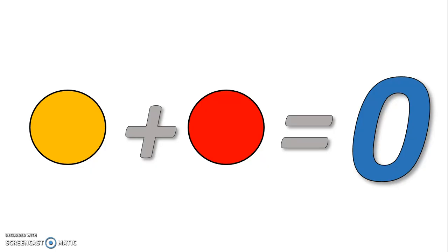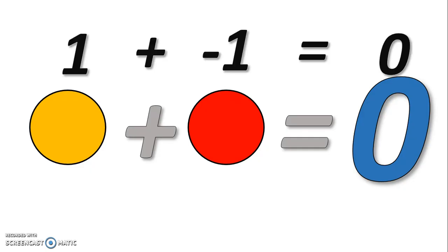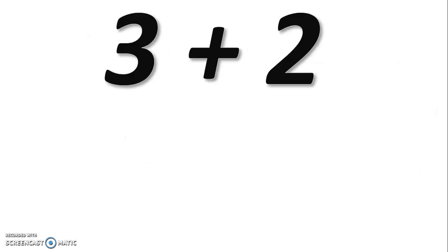So a positive and a negative integer combine to make zero. One and negative one equals zero.